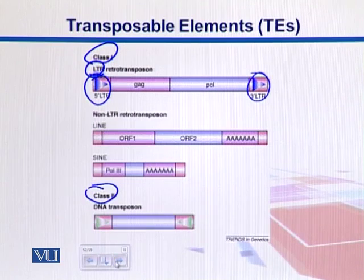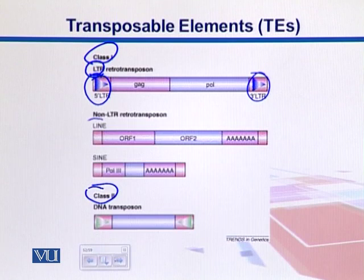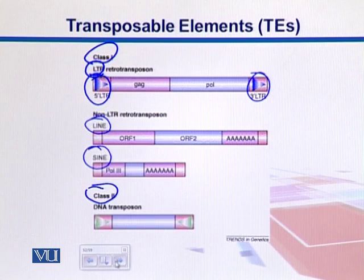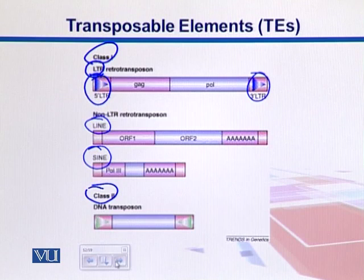In another category, we have non-LTR retrotransposons, which do not have those long terminal repeats. Examples are LINEs, which are larger, and SINEs, which are comparatively simpler. LINE stands for long interspersed nuclear elements and SINE stands for short interspersed nuclear elements. In addition to that, we also have DNA transposons.